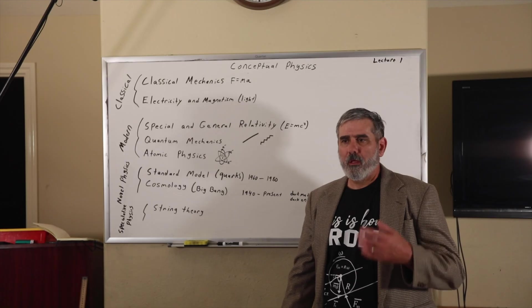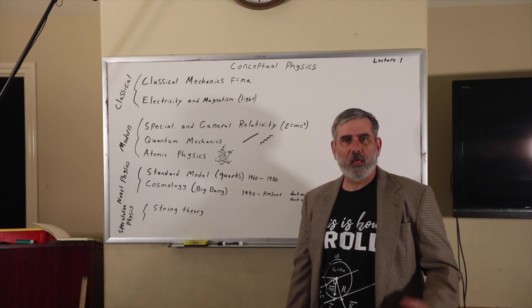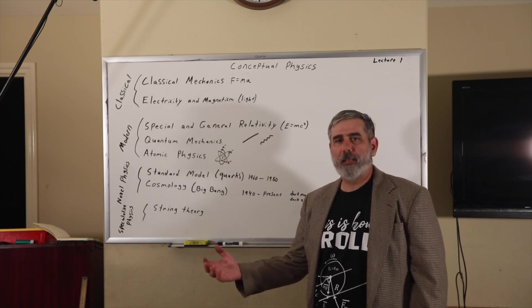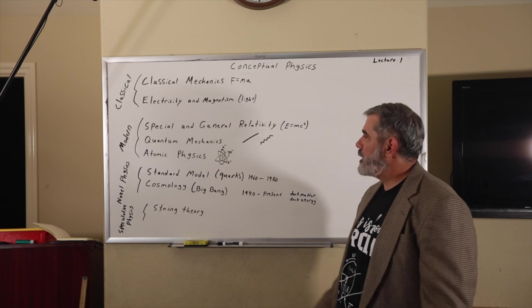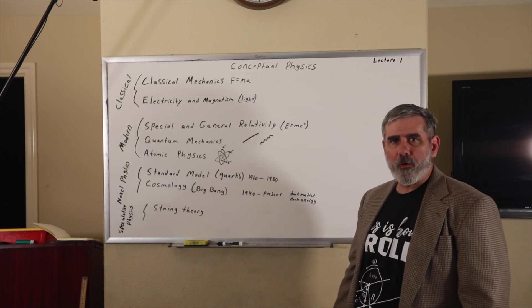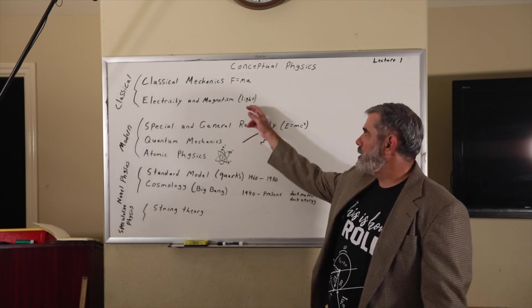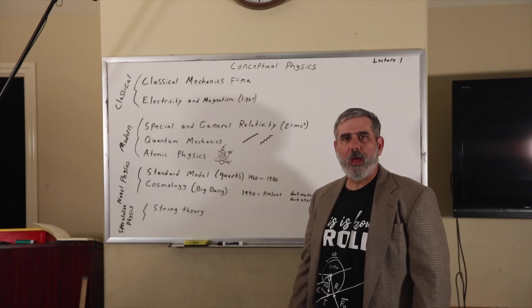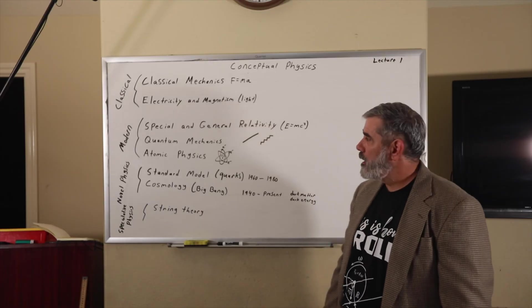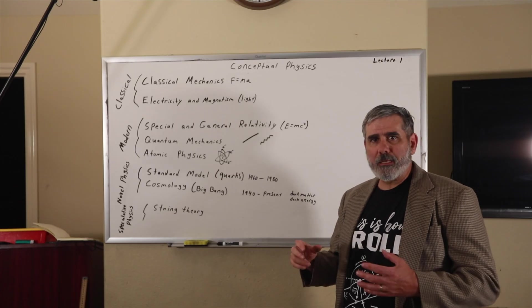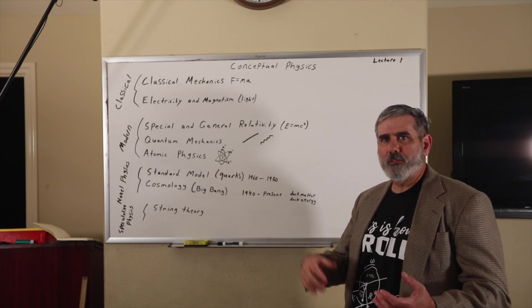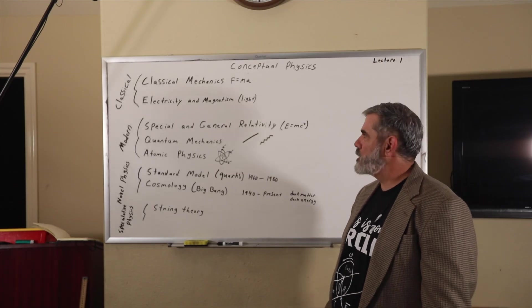He basically took the existing laws that pertain to electricity, electric force and magnetic force and unified them into a single coherent theory, discovering that light was what he called electromagnetic wave or electromagnetic oscillation. So light being connected somehow to electric fields and magnetic fields was quite a revelation back in that time.